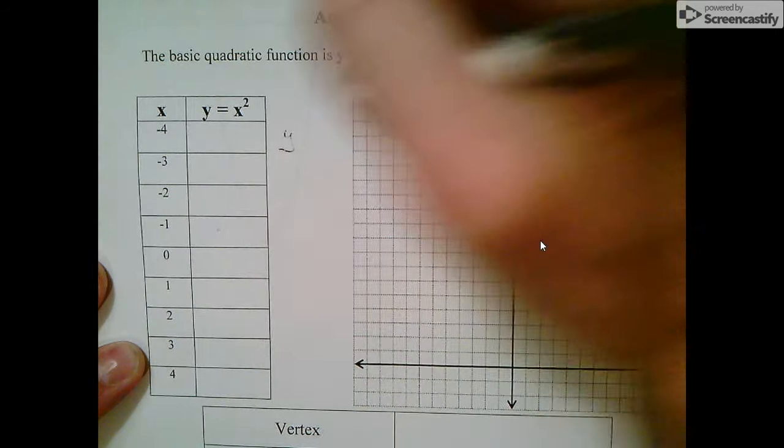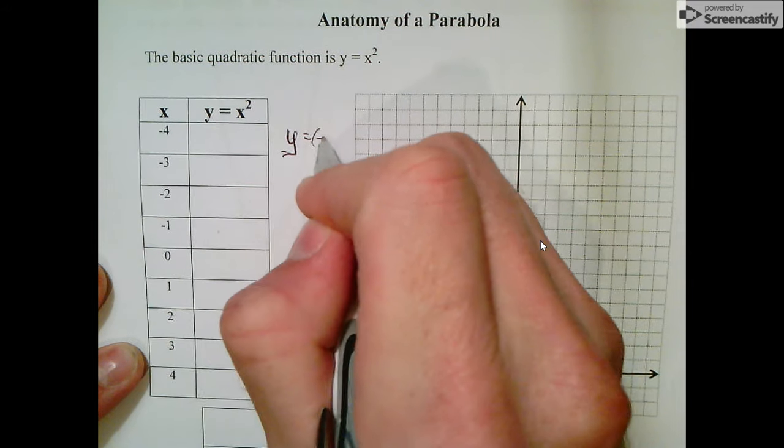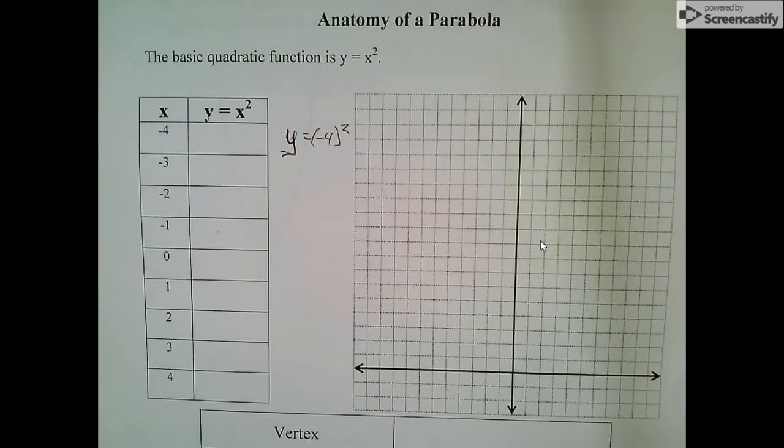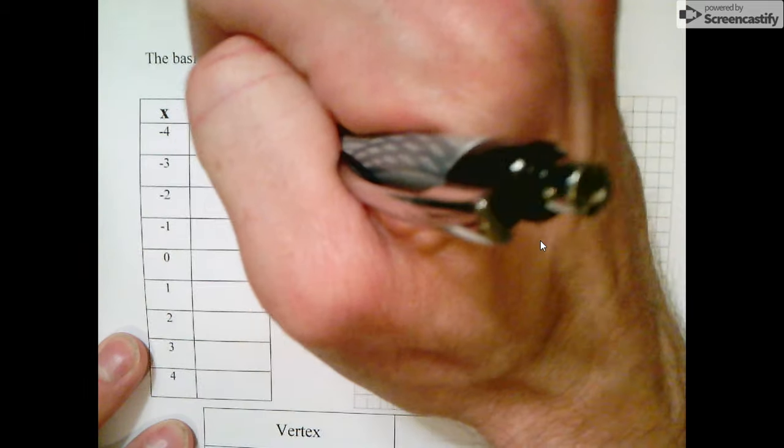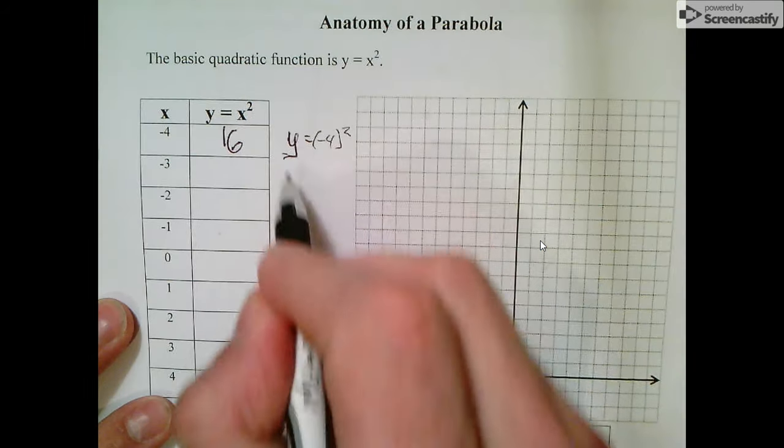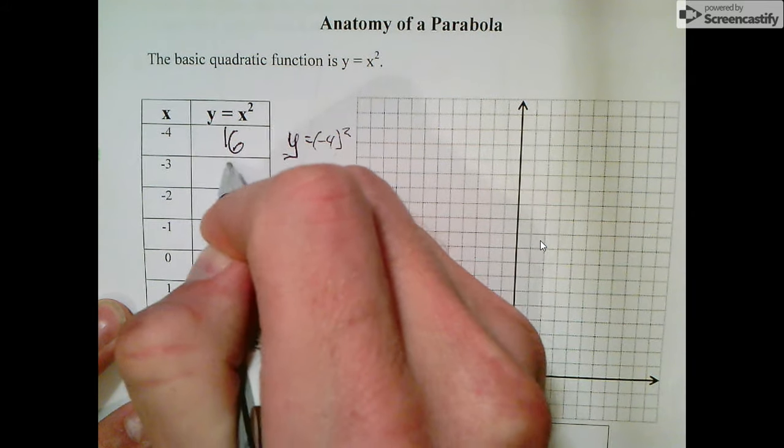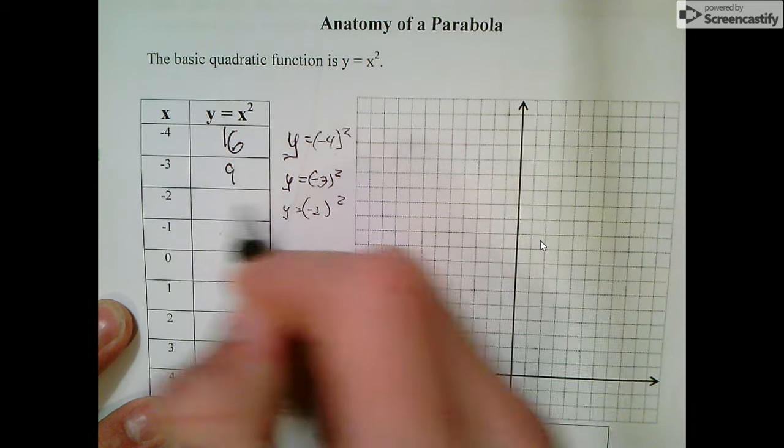So y equals negative 4 squared. Notice the negative 4 is in brackets, meaning we're squaring the negative as well as the 4, which gives us positive 16 because a negative times a negative is positive. Similarly, negative 3 squared gives positive 9, negative 2 squared gives positive 4.